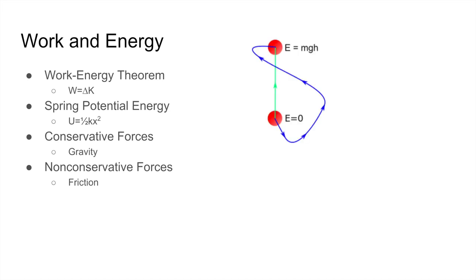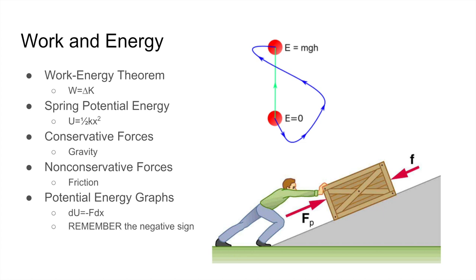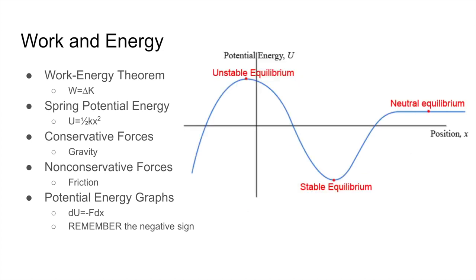Conservative forces produce the same work regardless of the path taken between two endpoints — gravity is an example. Non-conservative forces depend on the path taken; friction is an example, since a longer path produces greater work loss. For potential energy graphs, remember that dU = −F dx, with the negative sign being critical. The force is the negative of the slope of the potential energy curve.